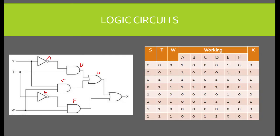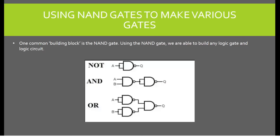Using NAND gates to create other logic gates. One common building block is the NAND gate. Using the NAND gate, we are able to build any logic gate and logic circuit. Here, it can be seen that with one NAND gate and one input, we can create a NOT gate. With two NAND gates and two inputs, we can create an AND gate. And with three NAND gates and two inputs in the following structure, we can create an OR gate.